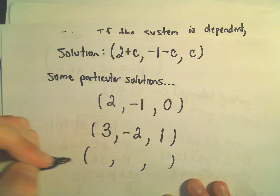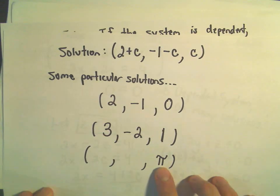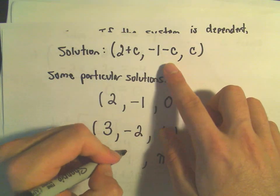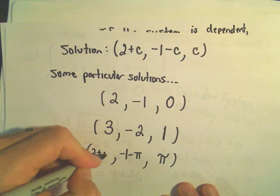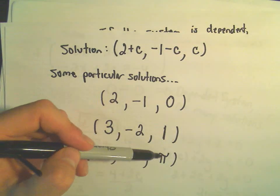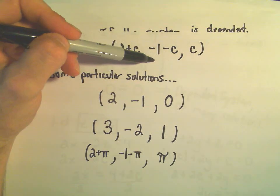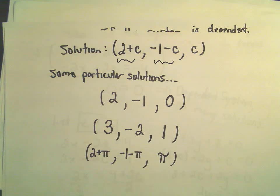You know, I can pick a weird number. Maybe I let c equal the number pi. Well, then y would be negative 1 minus pi. And then x would have to equal 2 plus pi. So, again, this is the idea. Just pick your favorite number for c. And then you can backtrack and figure out the value that would go with y. And then you can also figure out the value that goes with x.